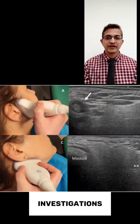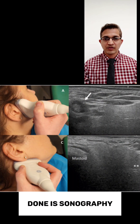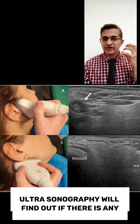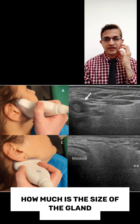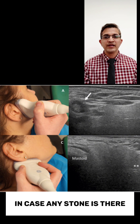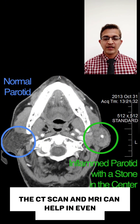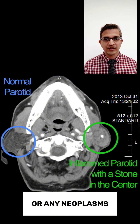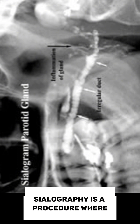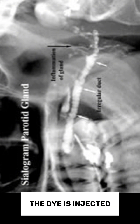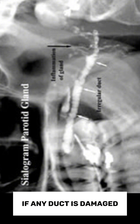The most common investigation done is ultrasonography, which can find out if there is any collection inside and the size of the gland, and can detect stones. A CT scan or MRI can also be done, which can help identify any underlying malignancy or neoplasms. Another investigation is sialography — a dye is injected through the duct of the parotid gland and an X-ray of the entire gland is taken — so we can identify the ducts, detect any stones, or find damaged ducts.